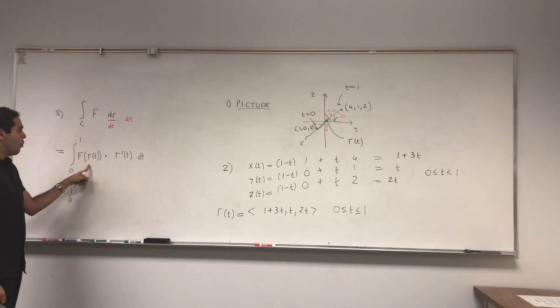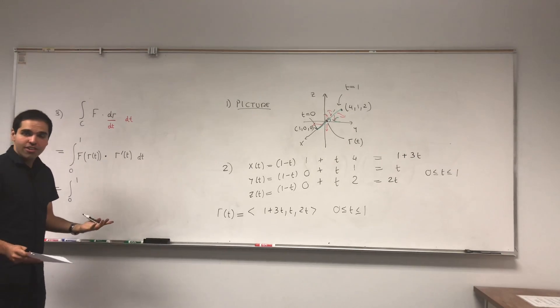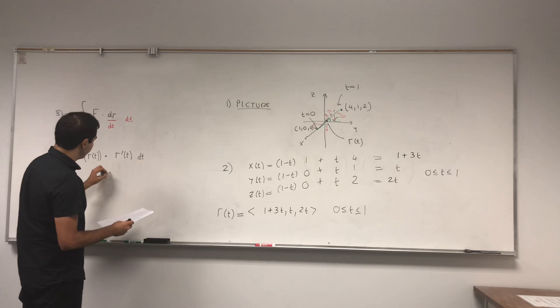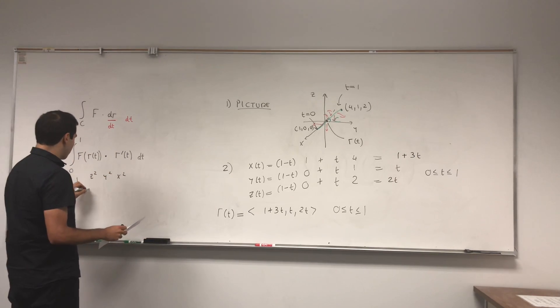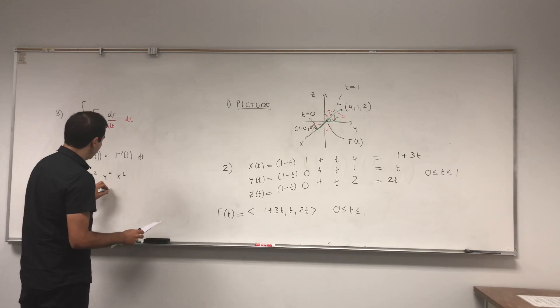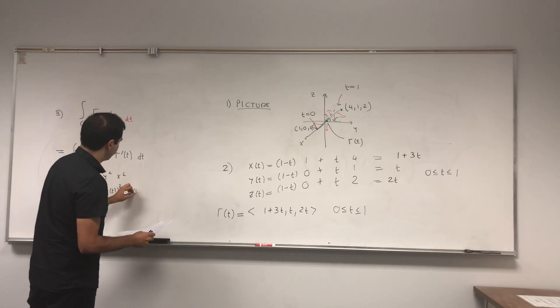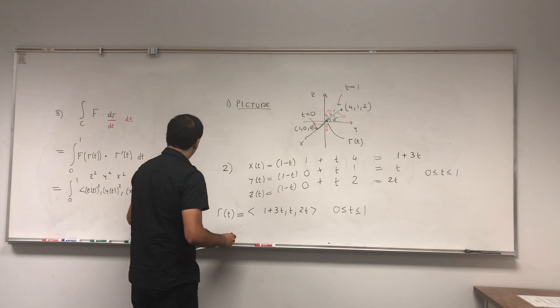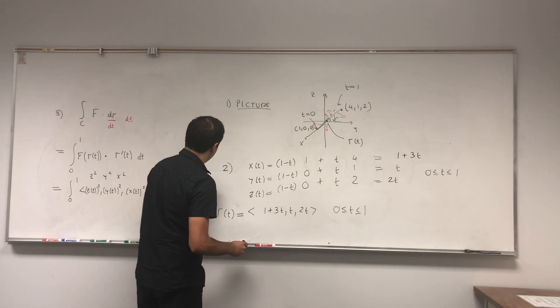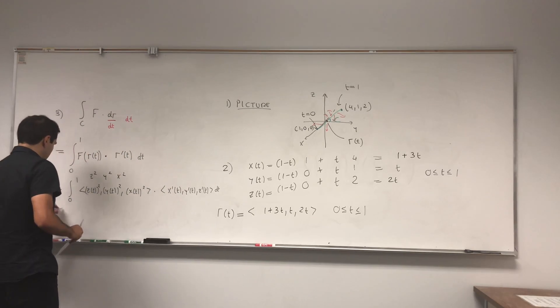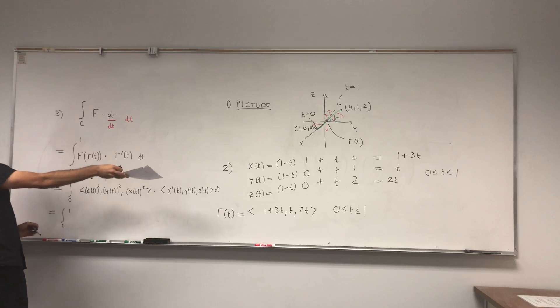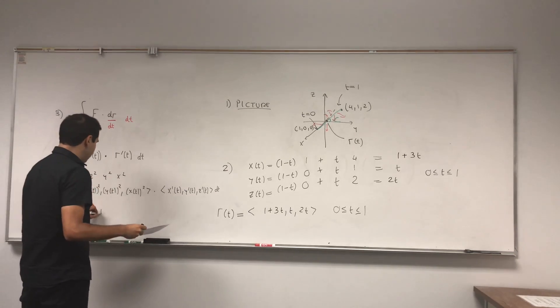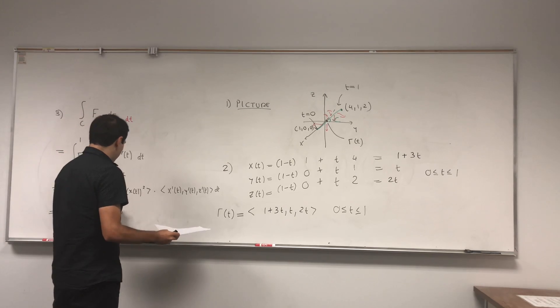Now, what is f(R(t))? It just means f, but with the values x(t), y(t), z(t). So remember f was z squared, y squared, x squared. But here, all you put is z(t) squared, y(t) squared, x(t) squared. And you dot it with r', which is just x'(t), y'(t), z'(t) dt. And once you have that, you just use x, y, and z. So z was 2t, so it's 4t squared. y was t, so t squared. And x was (1 + 3t) squared.